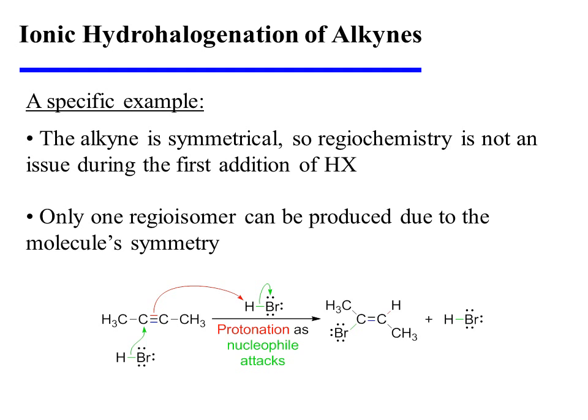Now let's consider a specific example of ionic hydrohalogenation of alkynes. In this instance, the alkyne substrate is symmetrical, so regiochemistry is not an issue during the first addition of HX — only one regioisomer can be produced due to the molecule's symmetry. As expected, an alkyne pi bond is protonated by one molecule of HBr, while a second molecule of HBr donates bromide to the carbon that would otherwise have lost a bond, producing the vinyl bromide product.